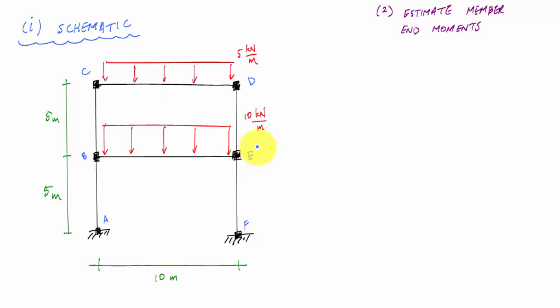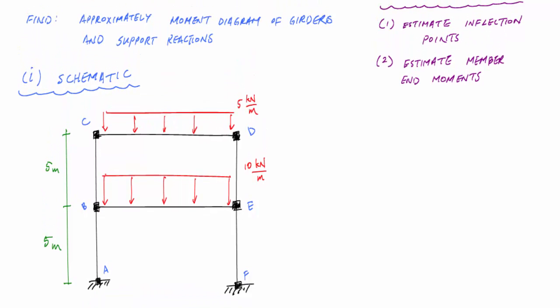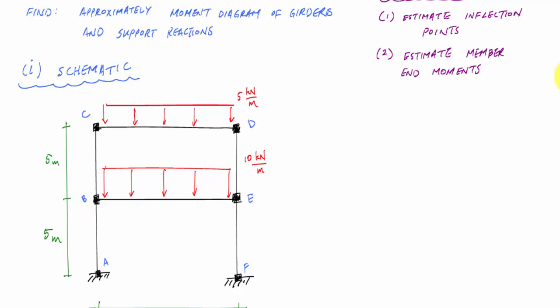The way I'm going to do this approximation is by guessing points of inflection. When I guess my points of inflection, I'm going to say that member CD, for instance, is somewhere between a fix-fix beam and a simply supported beam where C and D can rotate slightly. That's the kind of approximation I'm going to use to guess where the inflection points are going to be in member CD. But a lot of that depends on the stiffness or the moment of inertia of this beam and the length of the beam with respect to the moment of inertia and length of the columns attached to the member.